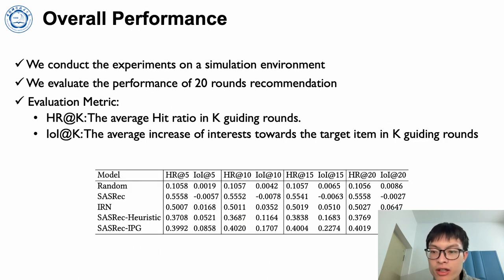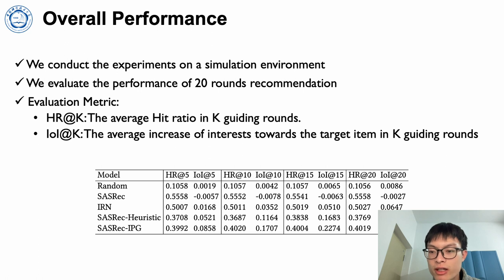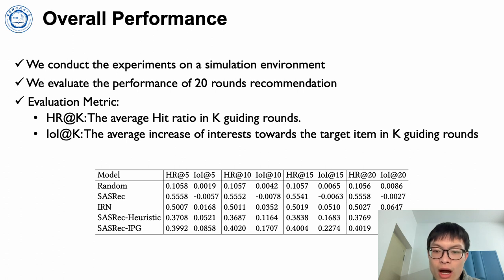To evaluate the effectiveness of our proposed method, we conduct experiments on a simulation environment. We evaluate the performance of 20 rounds of recommendations and choose two metrics. HR at K represents the average hit ratio in K guiding rounds, which reflects the recommendation performance. IOI at K is the average increase of interest towards the target item in K guiding rounds, which reflects the guiding performance.